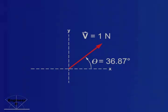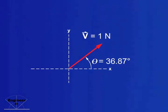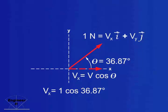Let's give vector v a value of 1 newton and an angle from the x axis of 36.87 degrees. We can look at its components using trigonometry. v sub x is equal to v cosine theta, which is 1 cosine 36.87 degrees.